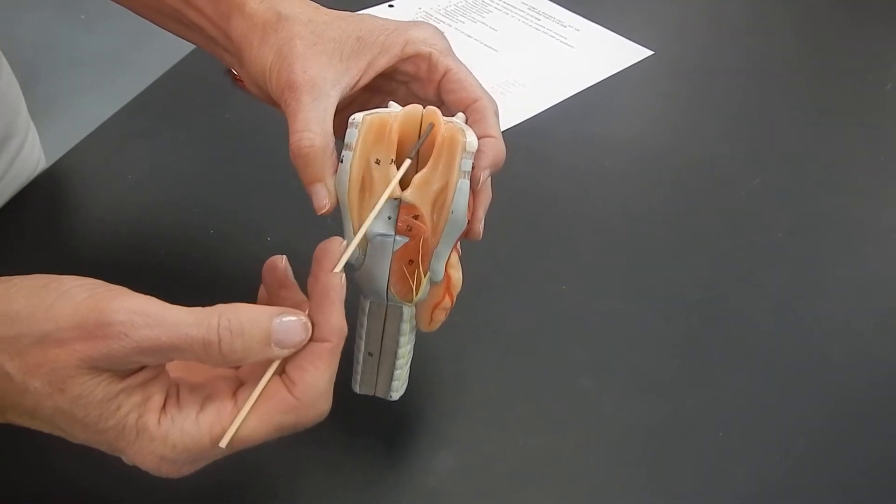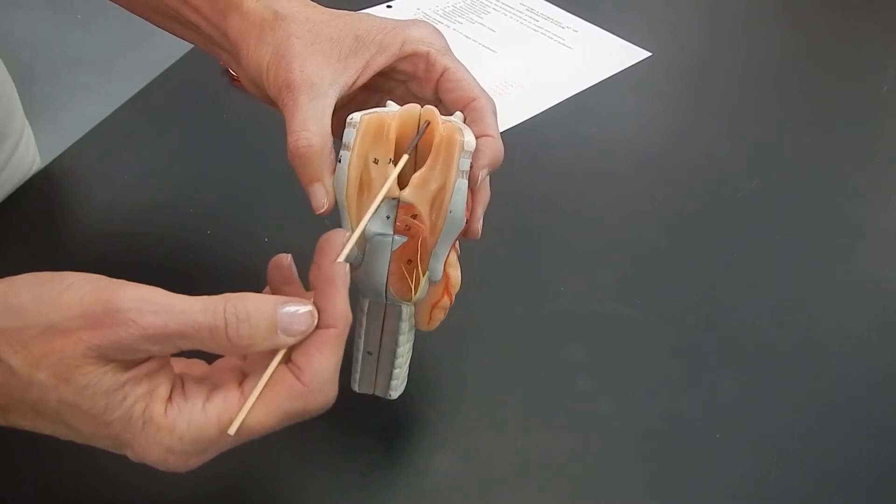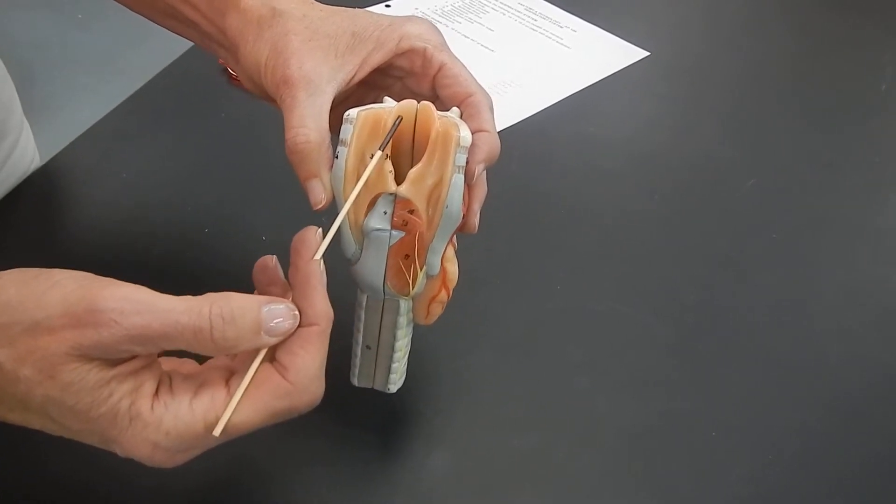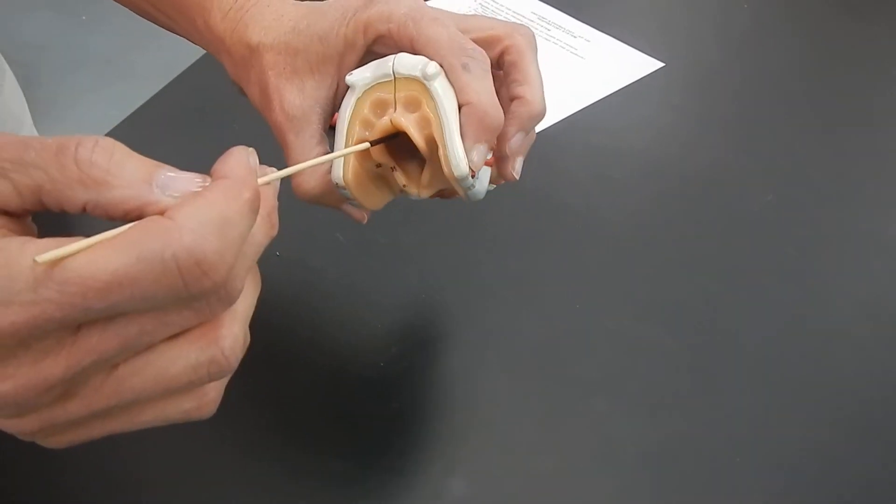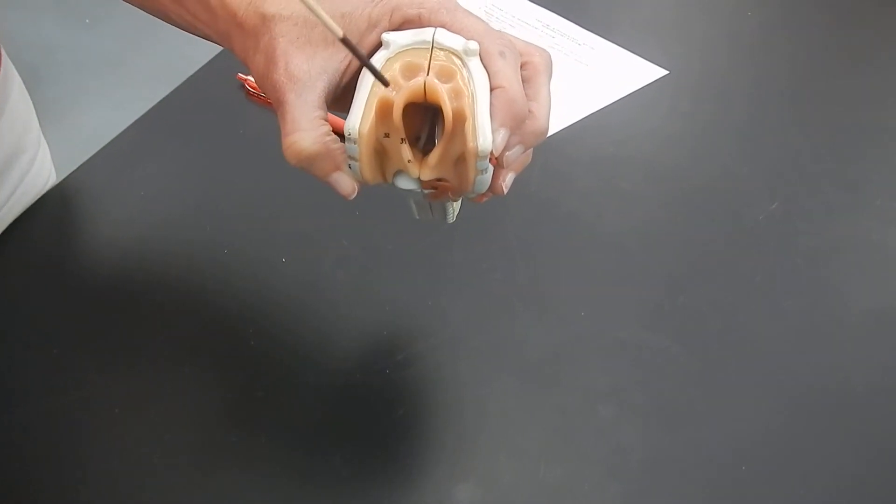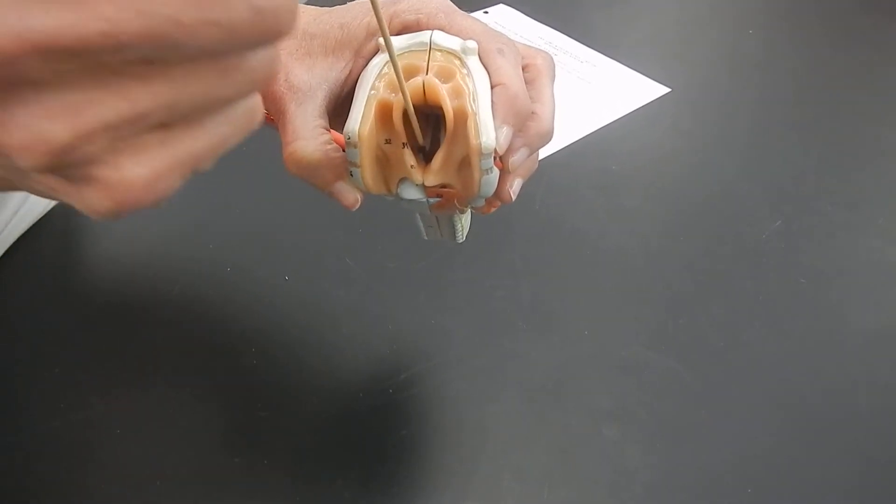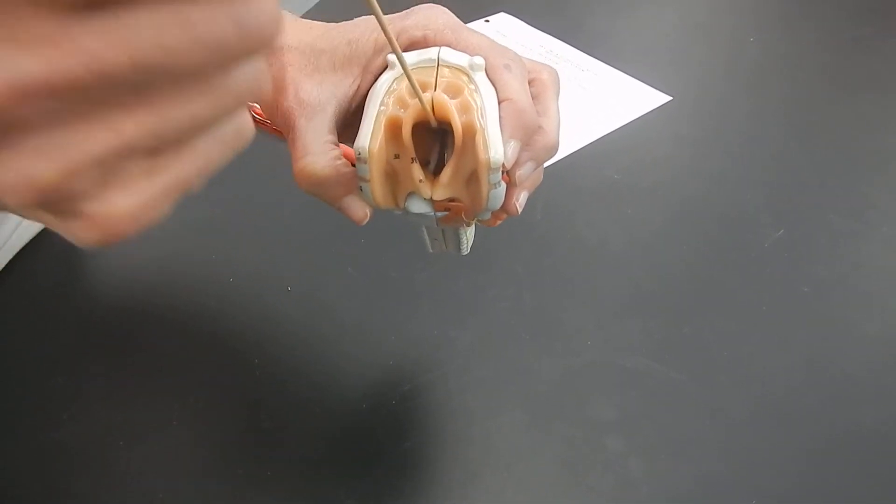And it forms this flap. The epiglottis is the guardian of the opening through the larynx. And this opening through the larynx is called the glottis.